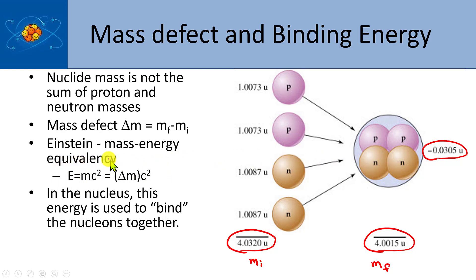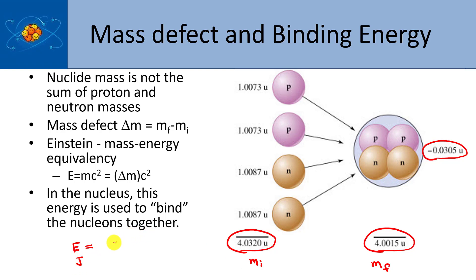The binding energy is directly related to the mass defect using the Einstein equation — E equals MC squared — which you've probably seen since junior high. Here M is actually a delta M, the loss in mass, i.e., the mass defect. When doing this calculation, energy is in joules, mass must be in kilograms, and the speed of light is in meters per second, squared. That gives units of kilograms times meters squared per second squared.